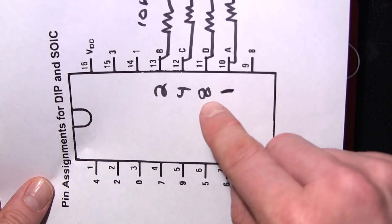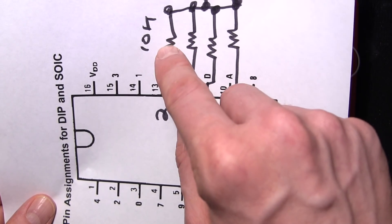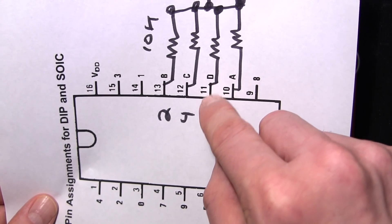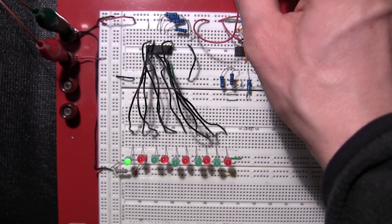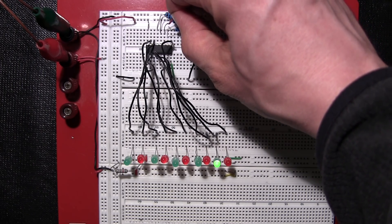So just say I want to light up the number 8, well this would be 0, 1, 0, 0. So I would touch that positive to pin number 11, and I'll do that right now. So there we go, number 8.